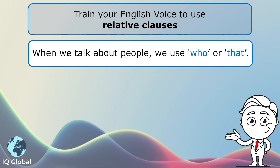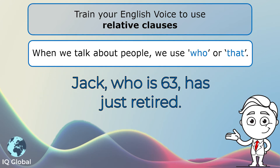Let's have a look at one more example: Jack, who is 63, has just retired. We are talking about a person — Jack — so I chose to use the word who. And this is the relative clause because it is telling us more about Jack.